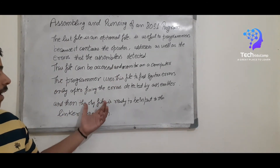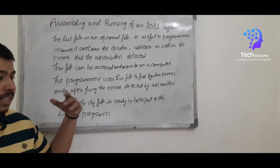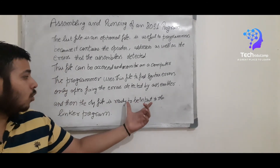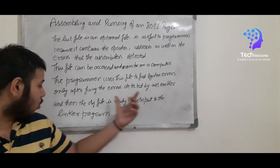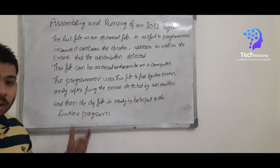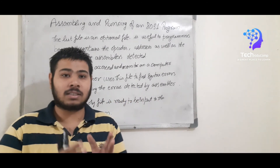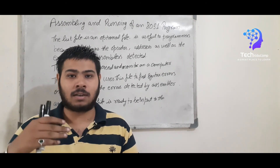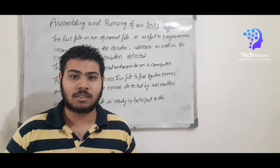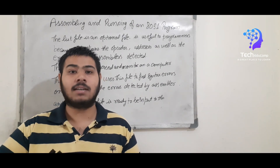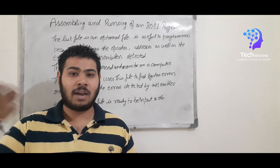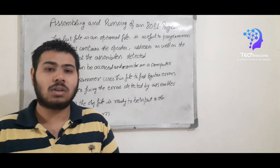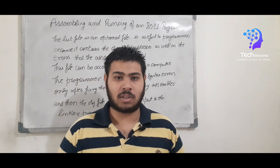The object file, which is an error-free file, is ready to be input to the linker program. The object file is then converted to an absolute object file, which is then converted to a hex file, as you have seen in the steps. So this concludes the discussion on this topic.